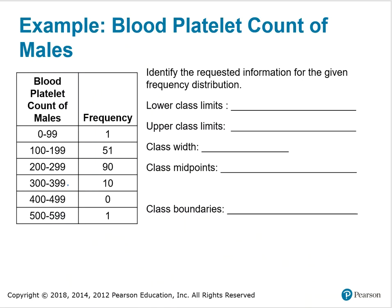Now let's do an example using blood platelet count of males. We have a frequency distribution where the first class is 0 to 99, then 100 to 199, 200 to 299, and so on. The number of males with a blood platelet count between 0 and 99 inclusive is 1; between 100 and 199 inclusive is 51, and so on to get the frequencies. We need to identify the lower class limits, upper class limits, class width, midpoints, and boundaries.